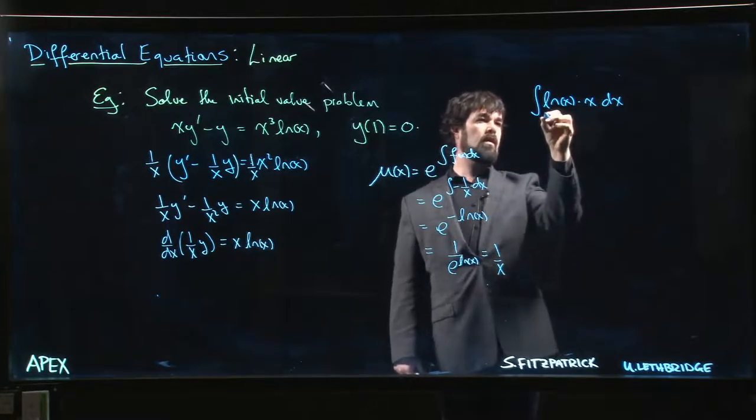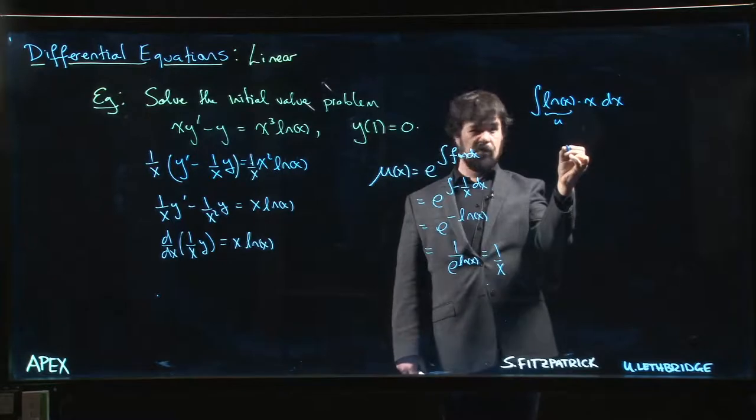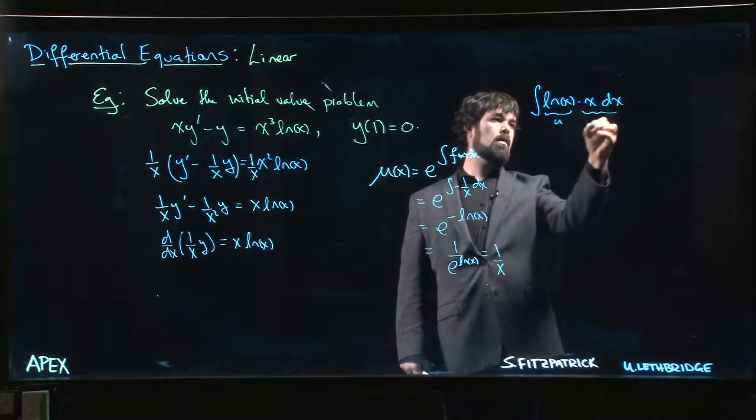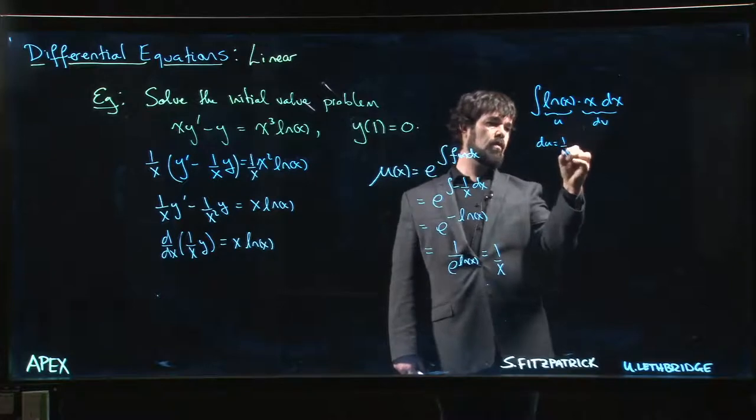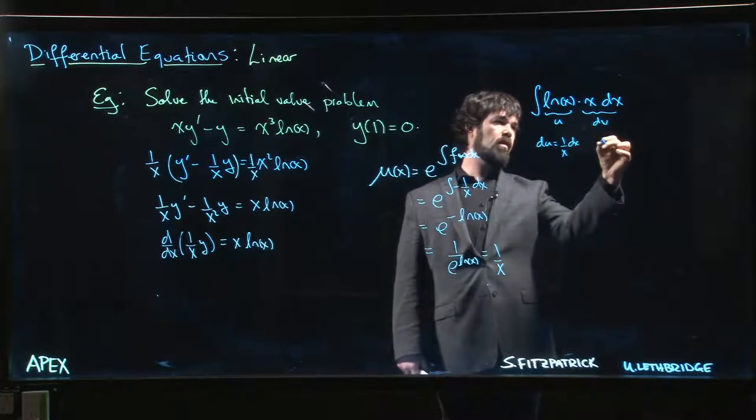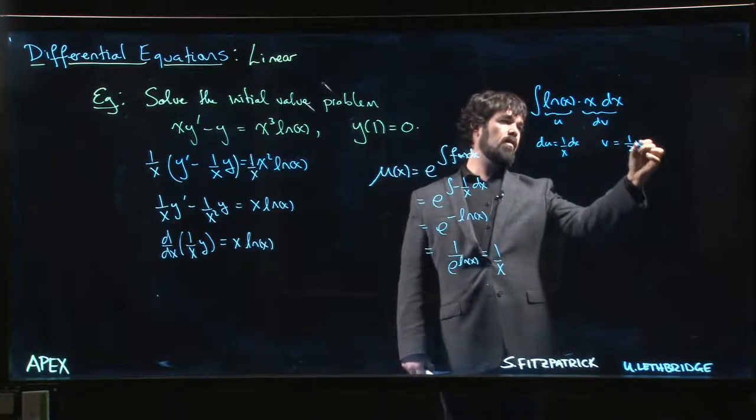If you have a natural log, that's usually the best choice for your u. That's going to be our dv. So du is (1/x)dx, and v will be (1/2)x².